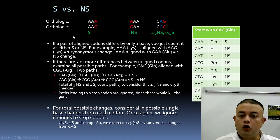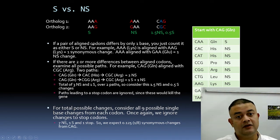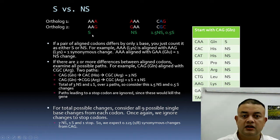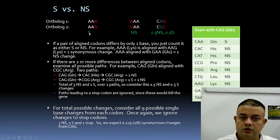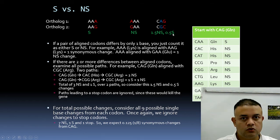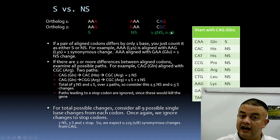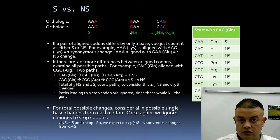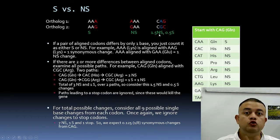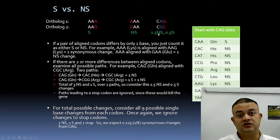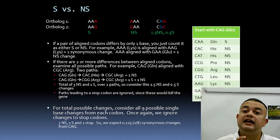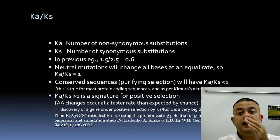Totaling across all three codon positions: synonymous = 1 (from codon 1) + 0.5 (from codon 3 average) = 1.5 synonymous. Non-synonymous = 1 (from codon 2) + 1.5 (from codon 3 average) = 2.5 non-synonymous. So we have 2.5 non-synonymous and 1.5 synonymous changes.